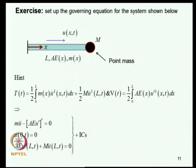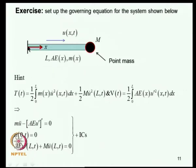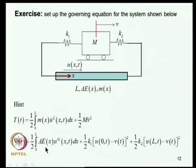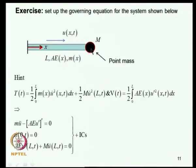When an inertial element is present at the boundary, such as a point mass at one end, the kinetic energy consists of energy in the bar plus the kinetic energy of the mass. The strain energy is the energy stored in the bar. Applying Hamilton's principle gives the same field equation, and at the fixed end the displacement boundary condition holds. At the free end with the mass, the axial thrust due to elastic action has an additional term due to the inertia of the mass, appearing in the boundary condition.